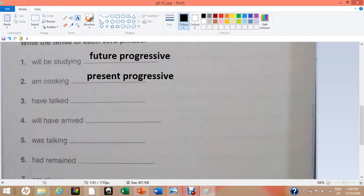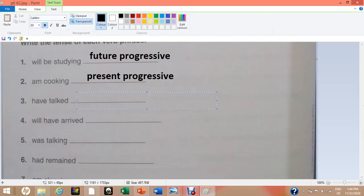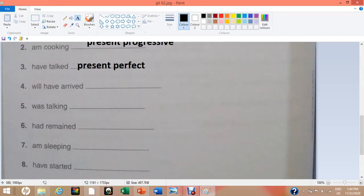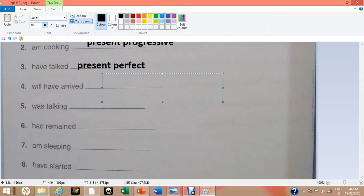Number three, have talked. This verb phrase will be included in the category of present perfect. Number four, will have arrived. This verb phrase will be included in the category of future perfect tense.